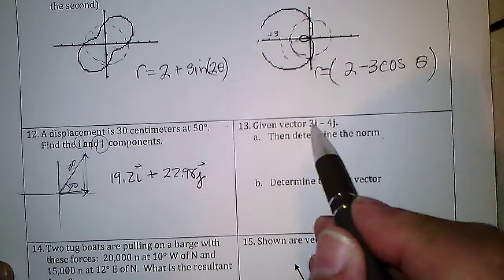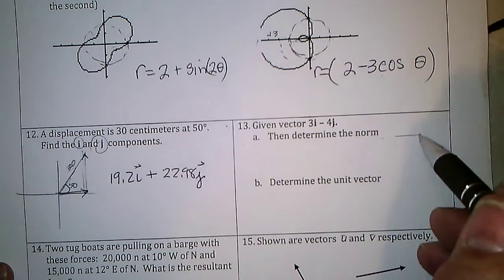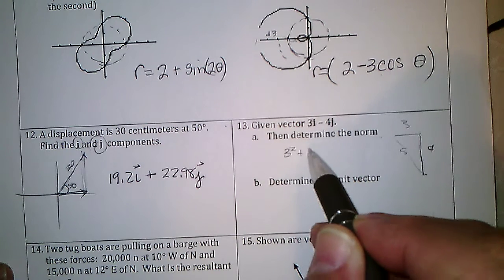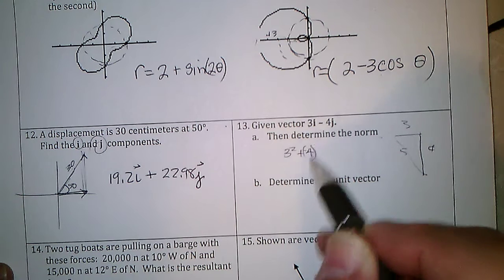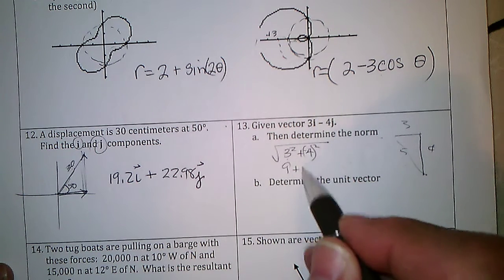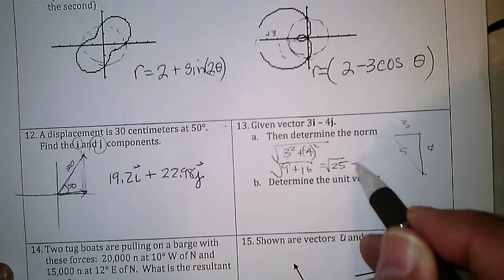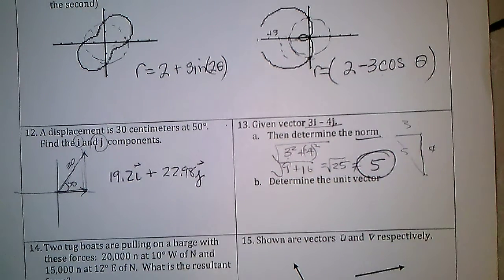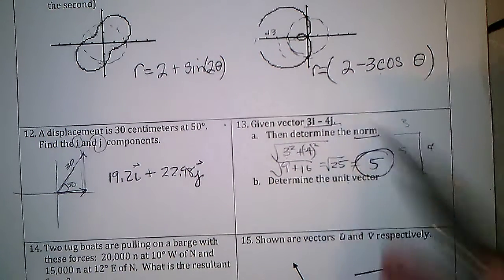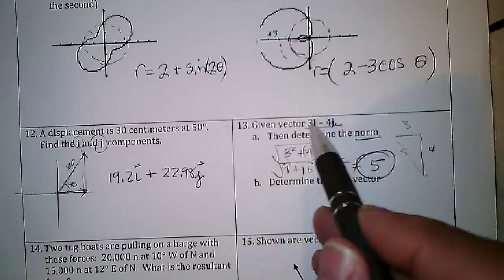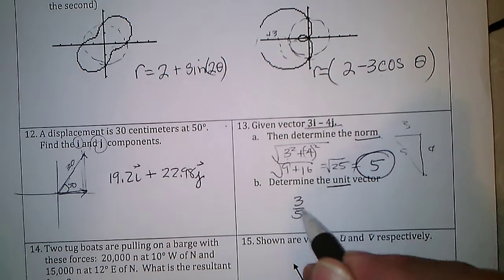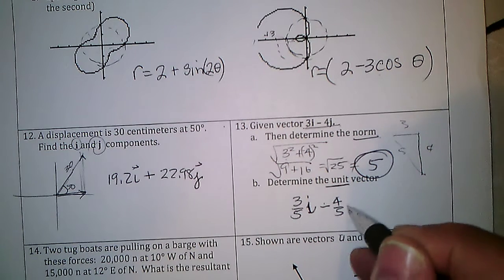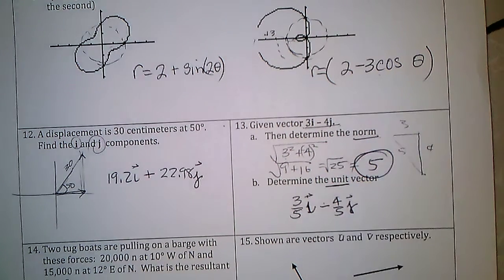Determine the norm — how long is the vector 3i − 4j? That's √(3² + (−4)²) = √(9 + 16) = √25 = 5. The norm is 5. For the unit vector, if it's 5 long and we want length 1, divide both parts by 5: that gives (3/5)i − (4/5)j in the x and y directions.